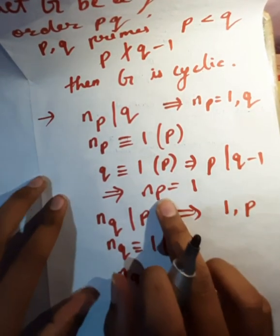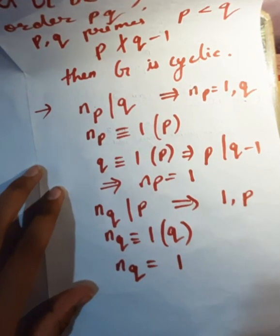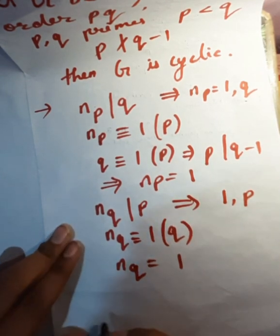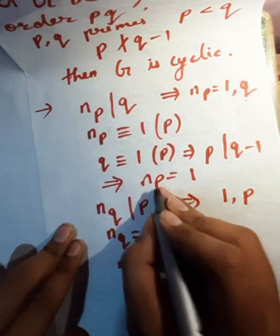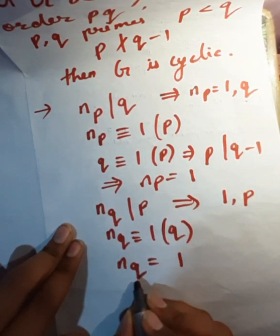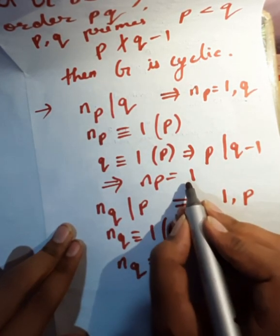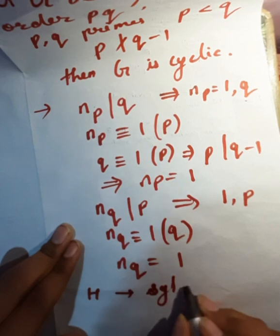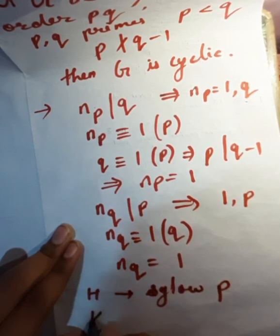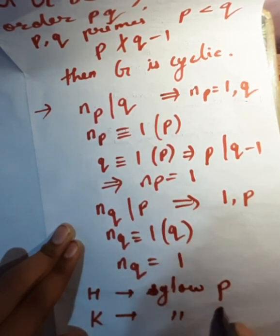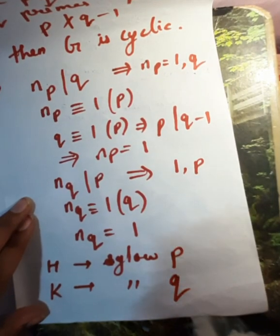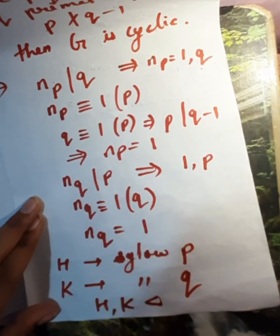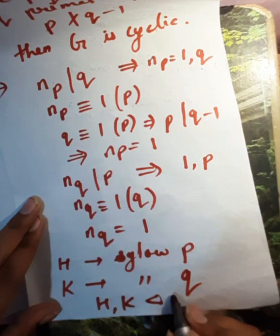So there is 1 Sylow p-subgroup and 1 Sylow q-subgroup. Hence, again by Sylow's theorem, the Sylow p-subgroup and the Sylow q-subgroup are normal in G since they are 1 in number. Let H be the Sylow p-subgroup and K be the Sylow q-subgroup, normal in G.